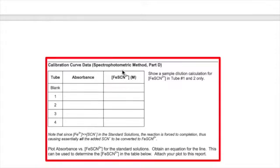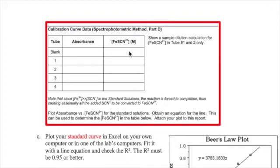At the same time, have your partner calculate the equilibrium concentration of the standard solutions and record those in the FeSCN2+ column next to the standard absorbance values. If you don't remember how to calculate the concentration of the complex ion in the standard solutions, refer to video 2.